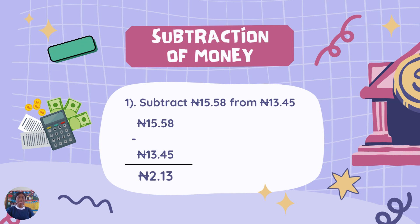Now over to subtraction. We have to remove 13 Naira 45 Kobo from 15 Naira 58 Kobo. Your Naira symbol should align, your point should align, and your figures should align. Put your subtraction symbol and your answer line. Take away 5 from 8 — you have 3. Take away 4 from 5 — you have 1. Put your decimal point. Take away 13 from 15 — you're left with 2. So your final answer is 2 Naira 13 Kobo.